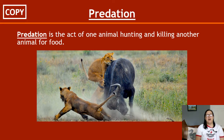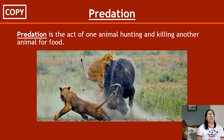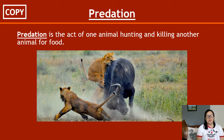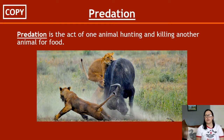Predation is the act of one animal hunting and killing another animal for food. We do not call herbivores predators — they do not hunt the grass. Squirrels are not predators; they don't go around hunting nuts. It's not a hunting-killing relationship. Predation is only for animals hunting and killing other animals for food.